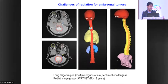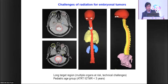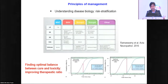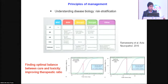Another major challenge is deciding treatment for ATRT, ETMR, and non-medulloblastoma tumors diagnosed in infancy — many will be less than three years old. What is the optimal timing for treatment and how to discuss this with the patient's family? First, risk stratification guides treatment selection. The main principle for radiation oncology is finding the optimal balance to maximize the therapeutic window.